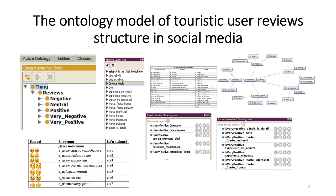As an attempt to solve this task, first of all we created an ontology model of touristic user reviews structure in social media. In the first stage, we divided the components of a message in social media: text, keywords, hashtags, images, stickers and punctuation marks. We divided the keywords into classes as positive, negative, very positive, neutral and very negative. We used three languages — Ukrainian, Romanian and English — for this model, because these three languages are most used in the Bukovinian touristic region to provide touristic services.